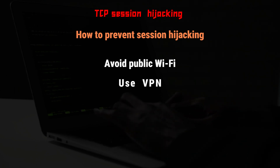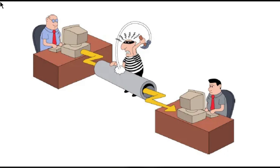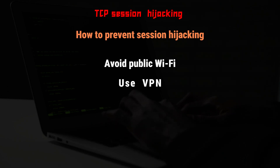Use a VPN: If you do need to use public Wi-Fi, use a VPN to maximize your safety and keep session hijackers out of your sessions. A VPN masks your IP address and keeps your online activities private by creating a private tunnel through which all your online activity travels. A VPN also encrypts the data you send and receive.